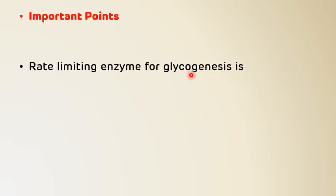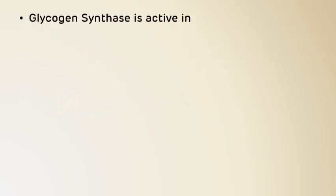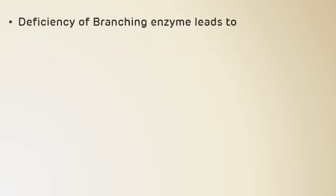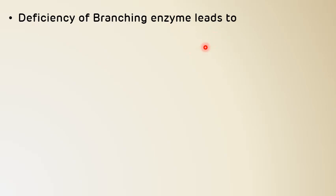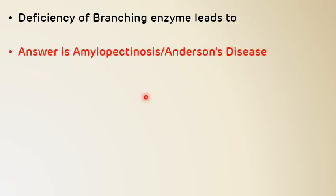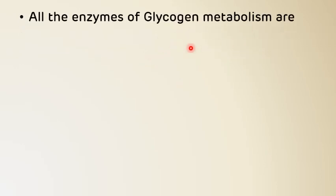Important points to remember: First, the rate-limiting enzyme of glycogenesis is glycogen synthase. Second, glycogen synthase is active only in the dephosphorylated state. Third, deficiency of the branching enzyme leads to amylopectinosis or Anderson's disease — a type 4 glycogen storage disease — in which the glycogen molecule has only alpha-1,4 linkages, causing hypoglycemia and hepatosplenomegaly. Finally, all enzymes of glycogen metabolism are cytosolic.